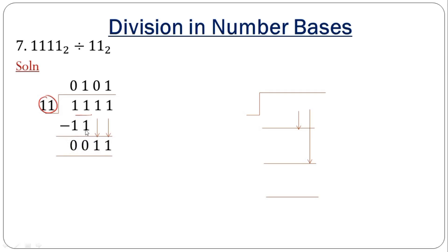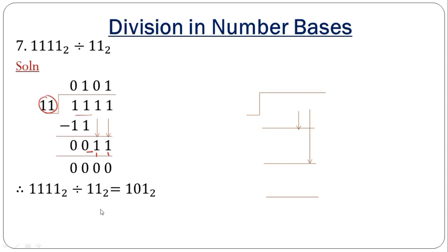Bring down the next 1. When you try to divide and it doesn't go, record 0, then bring down the remaining 1. Now we have 11 again. When 11 divides 11, it can go, so record 1. Note: there is an error in the working — there should be 11 here. When 1 multiplies 11, you get 11, and when you subtract you get 0s. That becomes your solution; you do not record leading zeros.